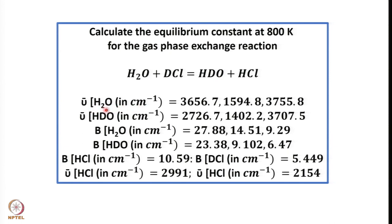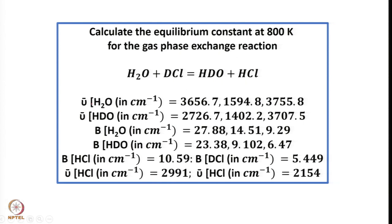The vibrational wave numbers for H₂O are 3656.7, 1594.8, and 3755.8 cm⁻¹. Water is a non-linear molecule, so the normal modes of vibration are 3N − 6. With N = 3 atoms, that gives 3×3 − 6 = 3 normal modes. Those three wave numbers are given here: 3656.7, 1594.8, and 3755.8 cm⁻¹. H₂O is also a non-linear molecule.